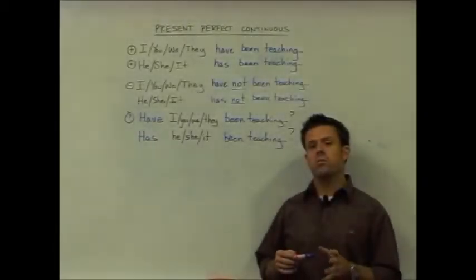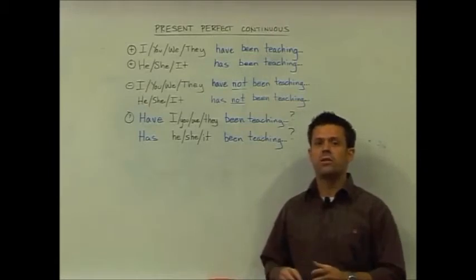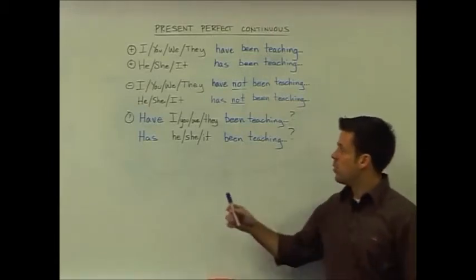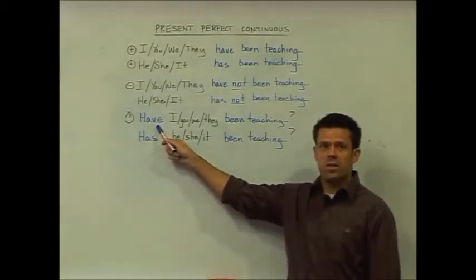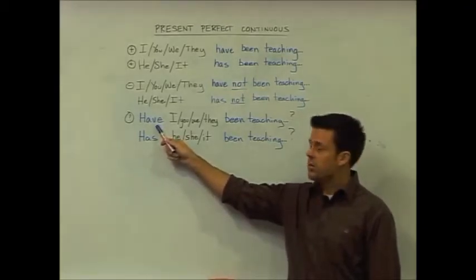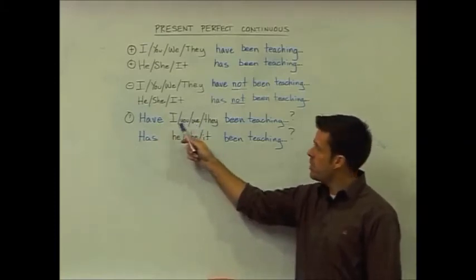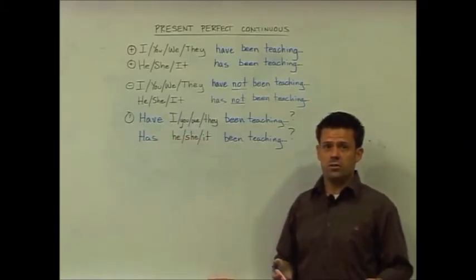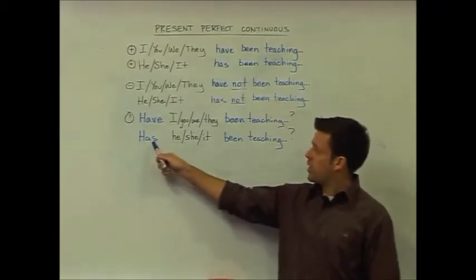In order to make the present perfect continuous questions, again following that pattern of inversion, what we've done is put the auxiliary verb 'have' at the beginning of the sentence, followed by the subject. 'Have I been teaching for five years?' is an example sentence.